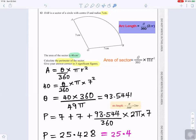So the angle is 93.544 divided by 360 times 2 pi r is 7. Put that all in the calculator, it gives you 25.428.